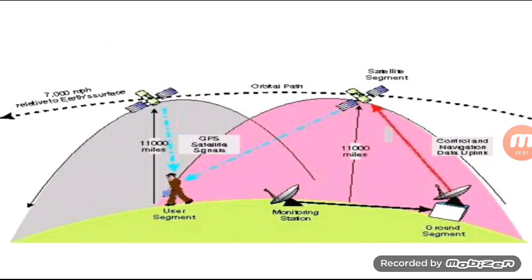You can see the diagram on screen showing the ground segment at the bottom right, the monitor station next to it, and the user segment with visible satellites at an altitude of 11,000 miles.